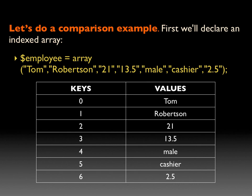First, we're going to declare an indexed array — this is not an associative array yet, this is the indexed type. What we're doing here is creating a variable called employee and assigning the value of that variable to be an array. Inside of the array we have the values of Tom, Robertson, 21, 13.5, mail, cashier, 2.5. The table below the actual array declaration syntax is just a demonstration of the way that PHP would assign the keys to those values.